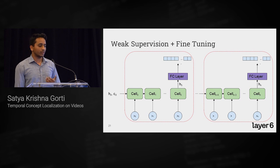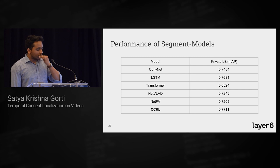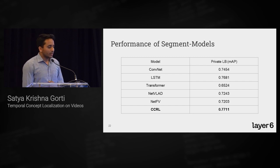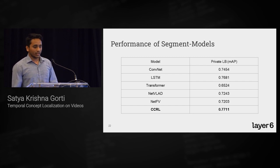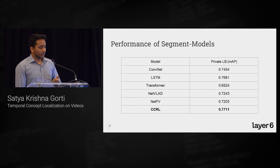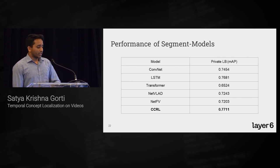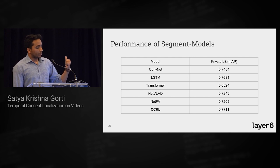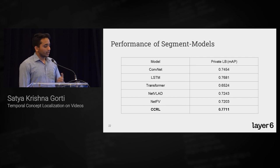Looking at preliminary results, the MAP scores across the models we've tried are decent but not great for this task. Our best-performing model is CCRL — Cross-Class Relevance Learning — which I'll talk about in a bit.